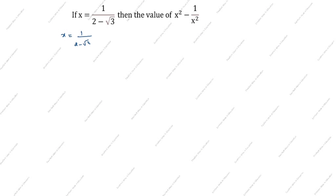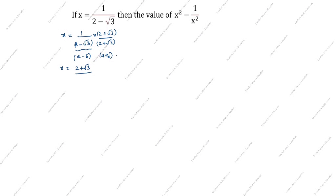We will rationalize the denominator. The denominator is 2 minus root 3, so we multiply by 2 plus root 3 divided by 2 plus root 3. This gives a minus b into a plus b, which equals a squared minus b squared. So x equals 2 plus root 3 divided by 2 squared minus root 3 squared, which is 4 minus 3 equals 1. Therefore x equals 2 plus root 3.